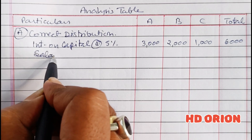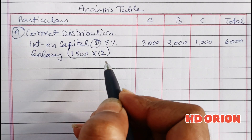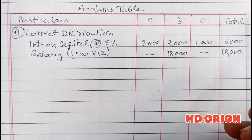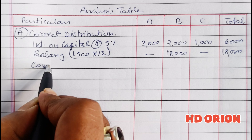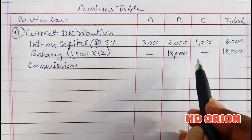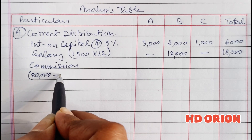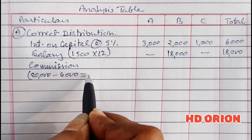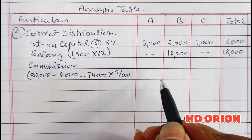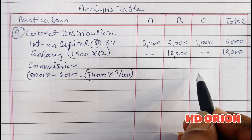And there is salary also. Salary at the rate of Rs. 1,500 per month, so 1,500 × 12 = Rs. 18,000, and it is to be paid to partner B, not to A and C. Then comes commission. Commission is calculated on net profit minus interest on capital. Net profit is Rs. 80,000 and interest on capital is Rs. 6,000, so on Rs. 74,000, commission of 5% is to be paid to C, which is Rs. 3,700.